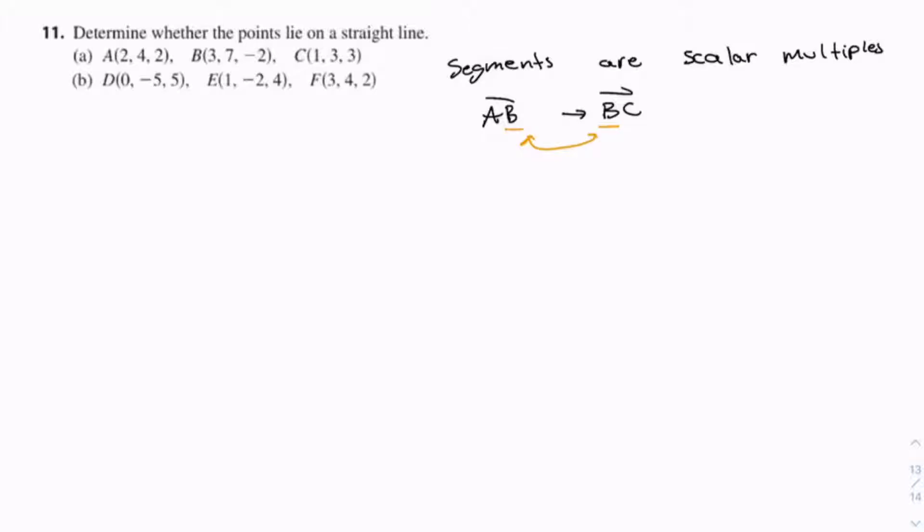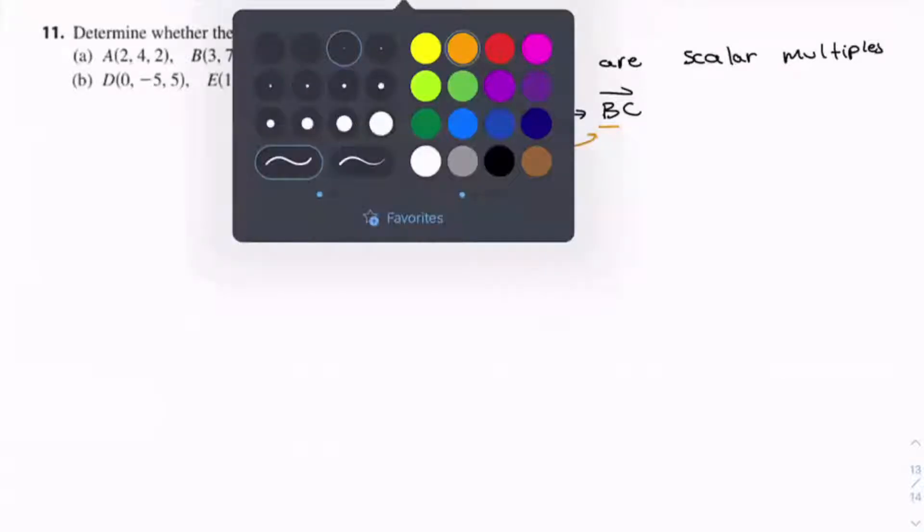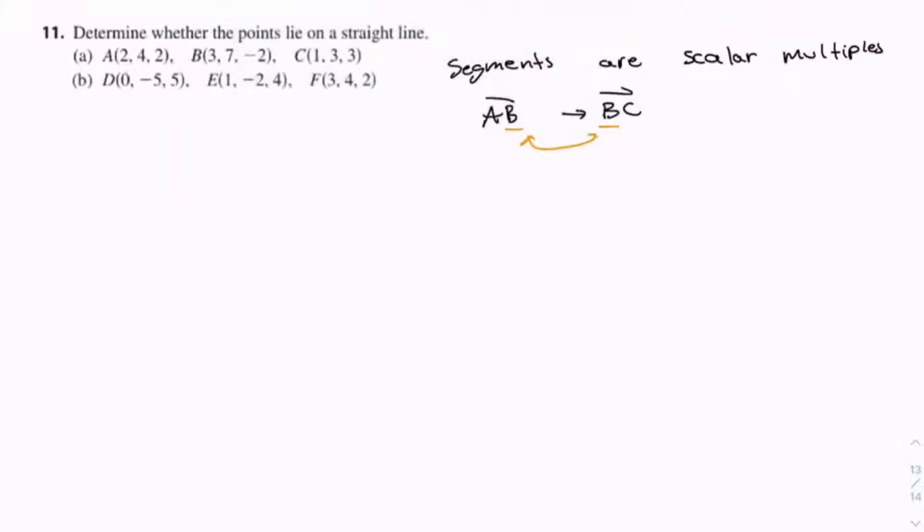And when I say segments are scalar multiple, what that means is that their components are multiple. So for example, 2, 4, 3 is a scalar multiple of 4, 8, 6, but not a scalar multiple of 4, 3, 6.